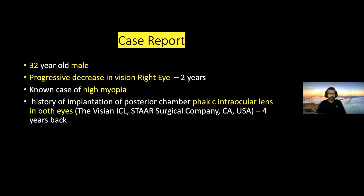Coming to our case report: a 32-year-old male patient presented with progressive decrease in vision in the right eye for two years. The patient was a known case of high myopia and had a history of implantation of a posterior chamber phacic intraocular lens in both eyes. The lens used was the Visian ICL by STAAR Surgical Company, USA, implanted around four years back.